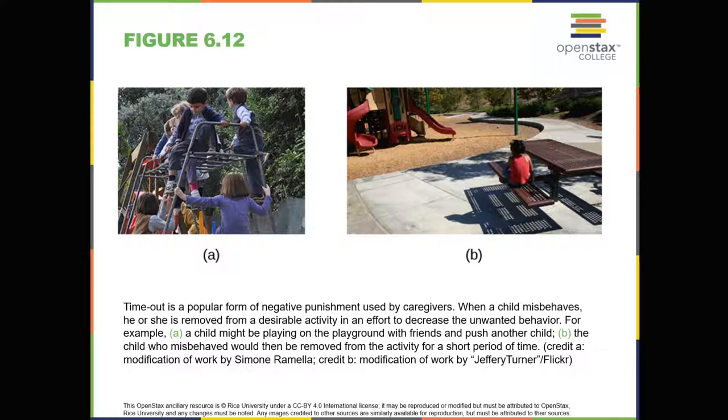There are several important points that you should know if you plan to implement time out as a behavior modification technique. First, make sure the child is being removed from a desirable activity and placed in a less desirable location. If the activity is something undesirable for the child, this technique will backfire because it is more enjoyable for the child to be removed from the activity. Second, the length of the time out is important. The general rule of thumb is one minute for each year of the child's age. Sophia is five. Therefore, she sits in a time out for five minutes. Setting a timer helps children know how long they have to sit in time out. Finally, as a caregiver, keep several guidelines in mind over the course of a time out. Remain calm when directing your child to time out. Ignore your child during time out because caregiver attention may reinforce misbehavior. And give the child a hug or a kind word when time out is over.